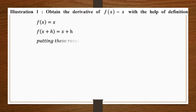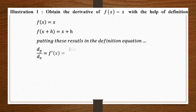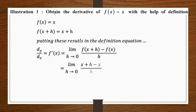We write these values into the definition equation: dy/dx, that is f'(x), equals limit h tends to 0, f(x+h) minus f(x) upon h. Substituting, we get (x + h − x) upon h. The x terms cancel, leaving limit h tends to 0 of h upon h, which gives us the answer 1. So the derivative of x is 1.